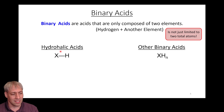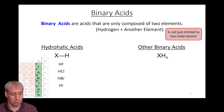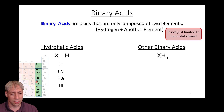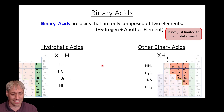One class of binary acids is the hydrohalic acids. You look at the halide column — column 17 on the periodic table — fluorine, chlorine, bromine, iodine. Each has seven electrons and can pair with hydrogen's one electron to fulfill an octet with a single bond. The Lewis dot structures show H bonded to F, Cl, Br, or I with three lone pairs. These are the hydrohalic acids.